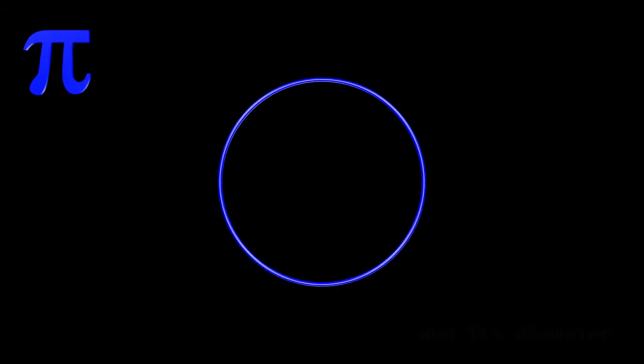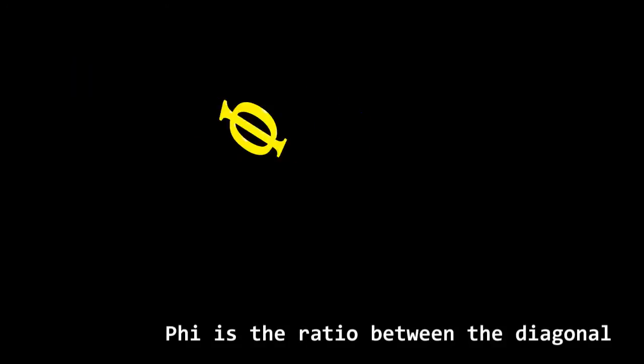Pi is the ratio between a circumference and its diameter. Phi is the ratio between the diagonal and the side of a pentagon.